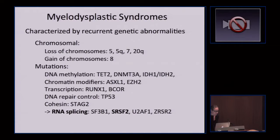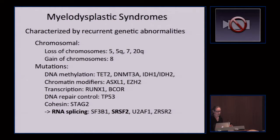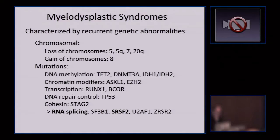MDS is characterized by recurrent genetic abnormalities. We have for a long time known about chromosomal abnormalities — loss of chromosomes 5, 5Q, 7, and 20Q, and gain of chromosomes such as trisomy 8. In the genomic era, we've learned much more: there are mutations in DNA methylation pathways, chromatin modifiers, transcription factors, DNA repair control genes, the cohesin complex, and of particular interest to our lab, in RNA splicing.